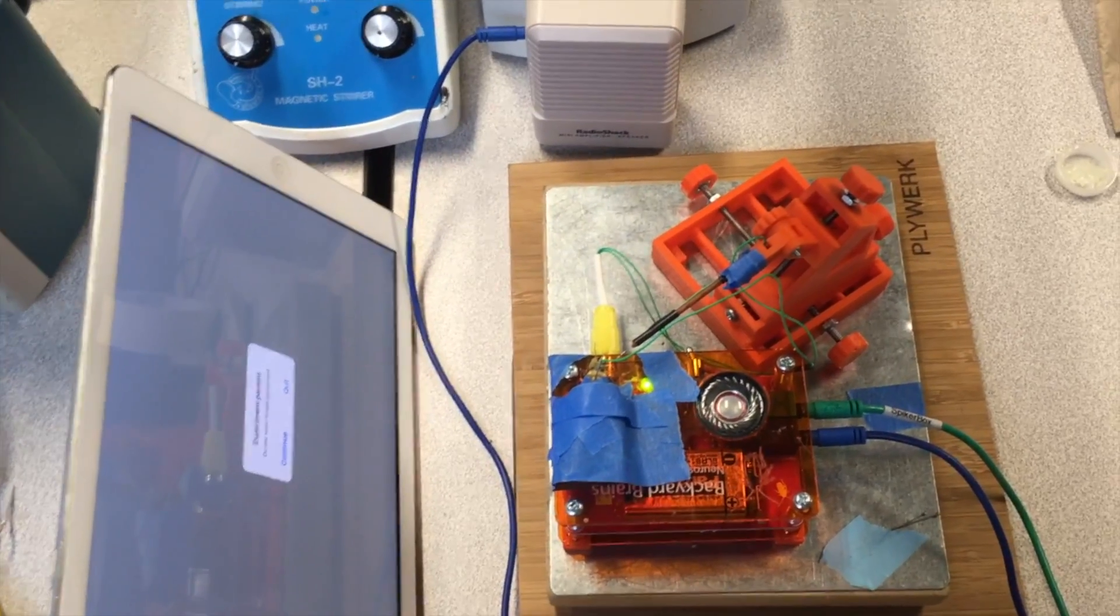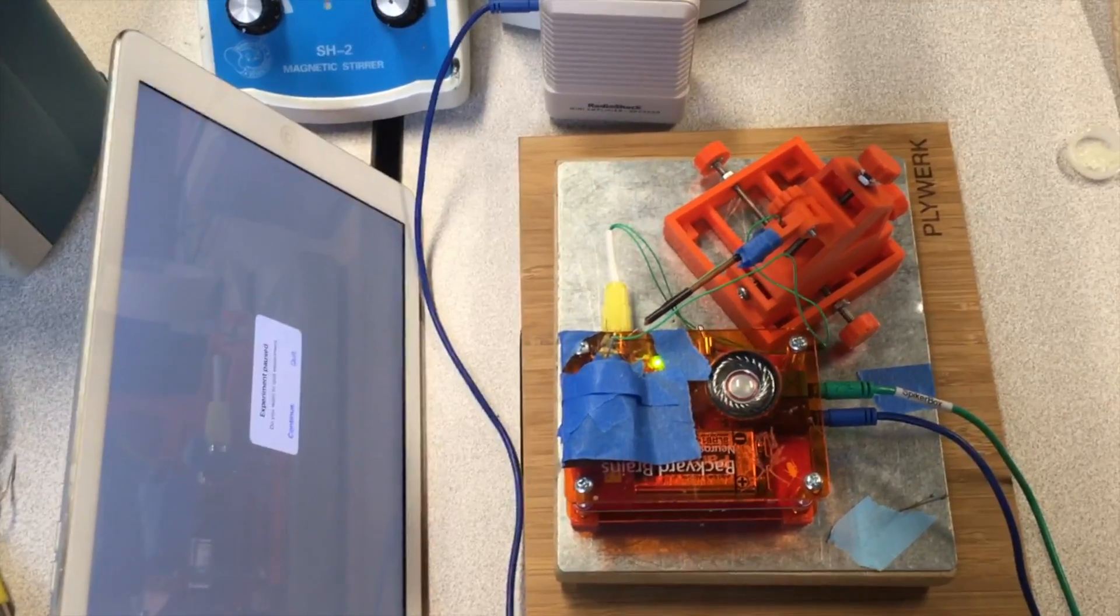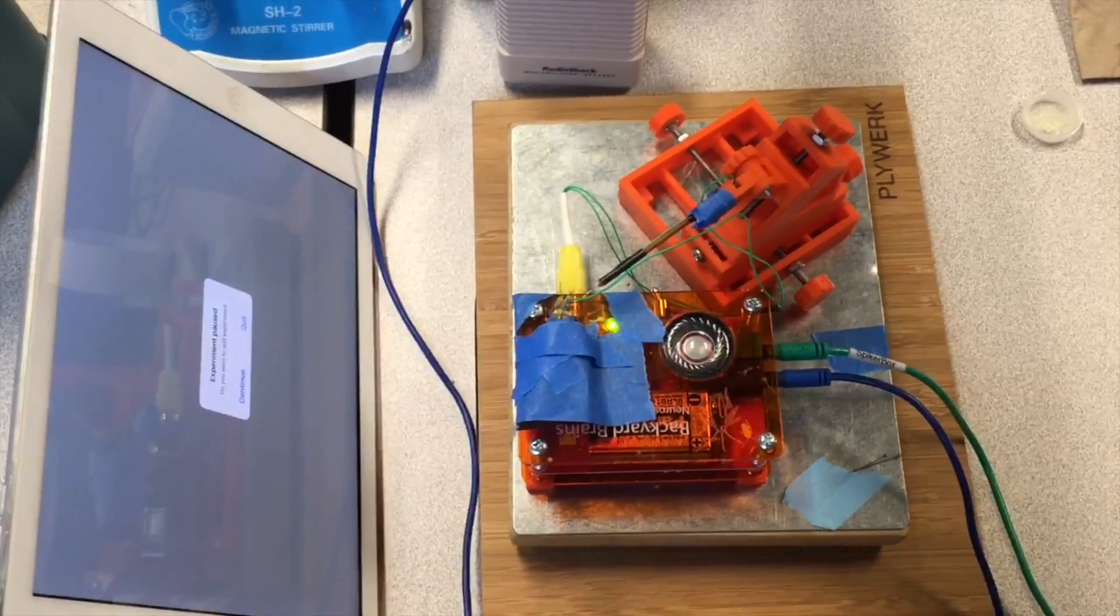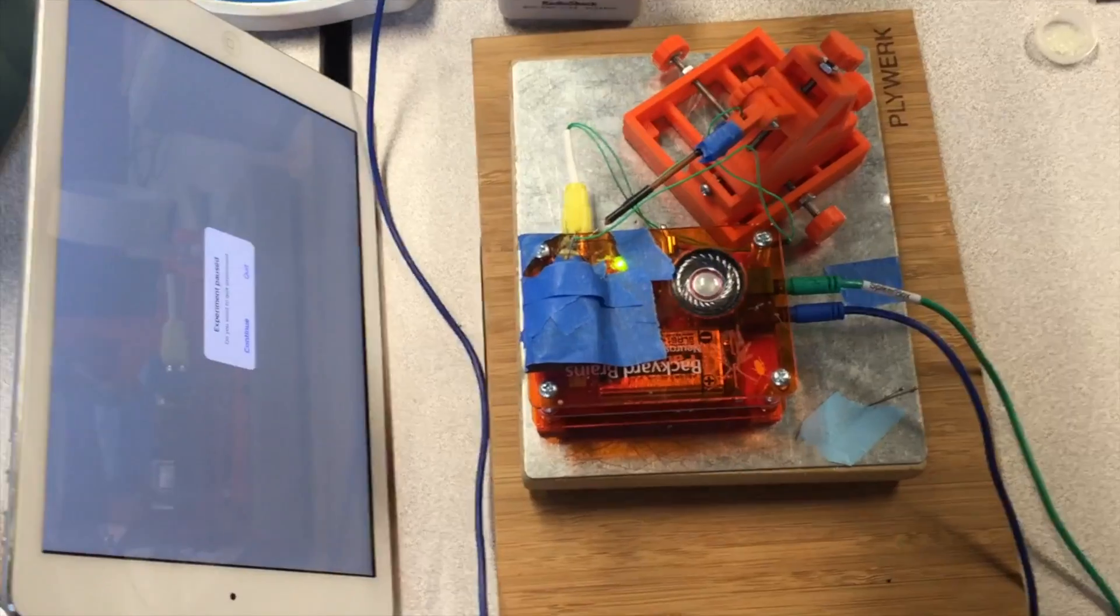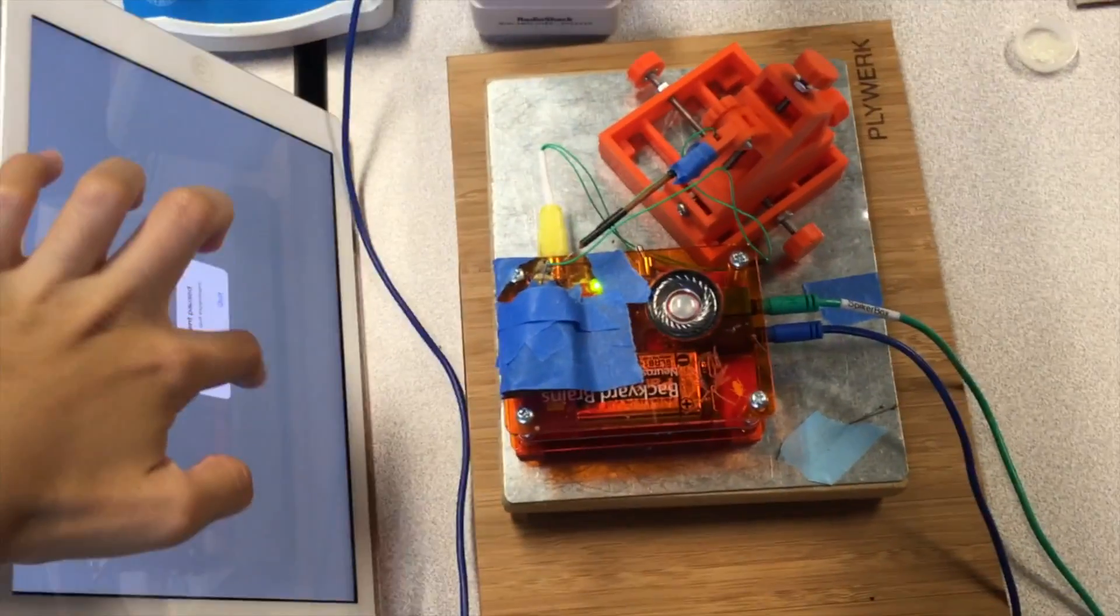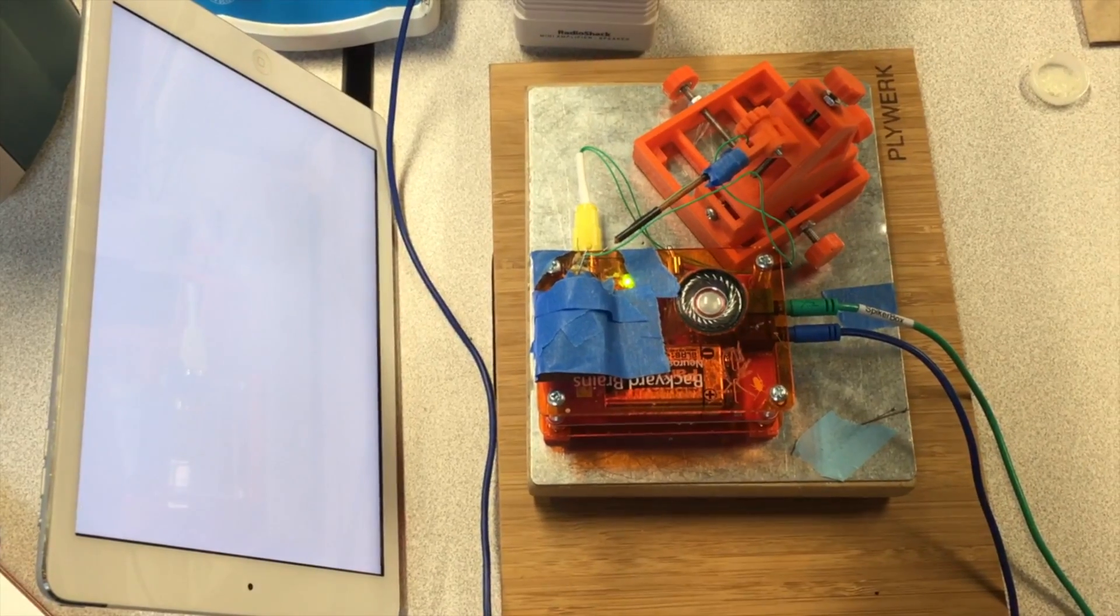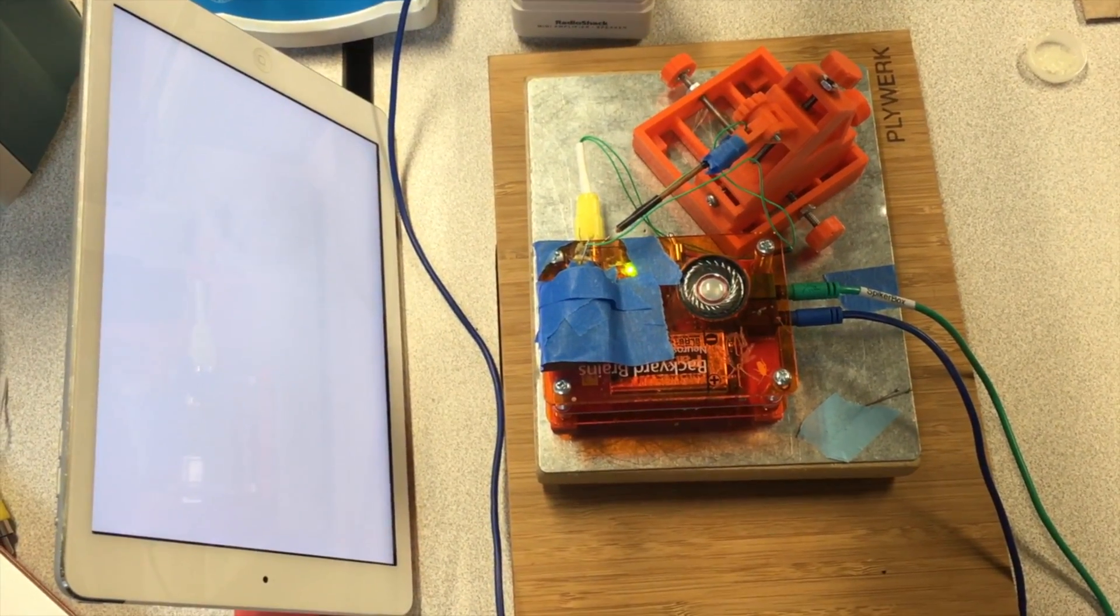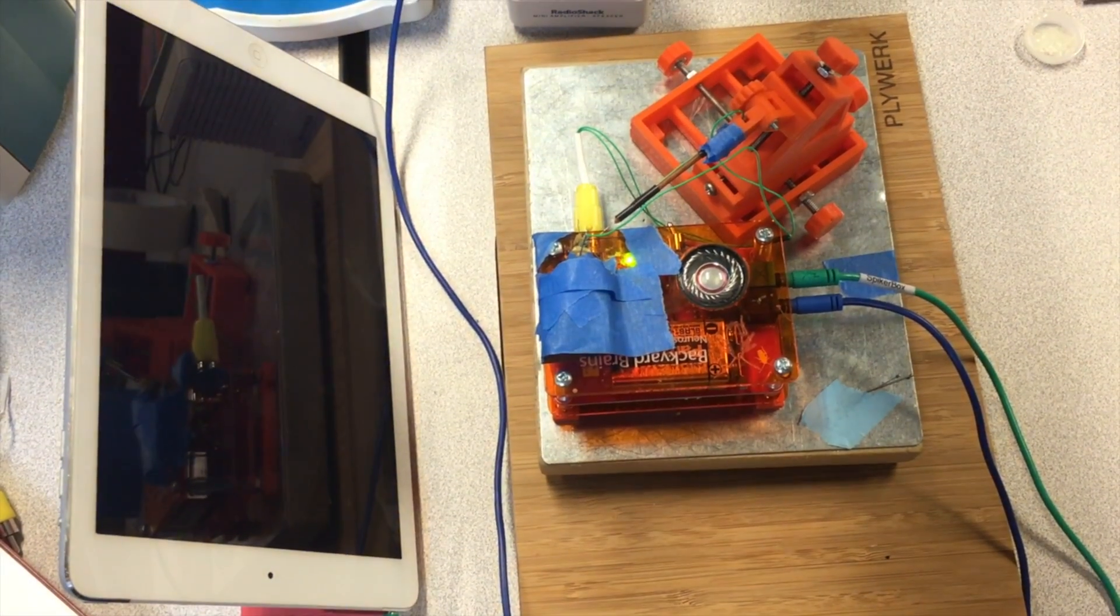So theoretically, the DCMD neuron will be very active and spike before the object hits the grasshopper, or in this case when the black ball fills up the whole screen. So let's see if we can hear some spikes. And that's a spike.